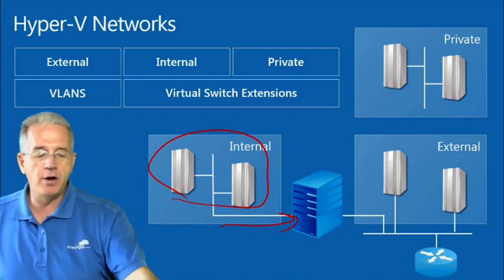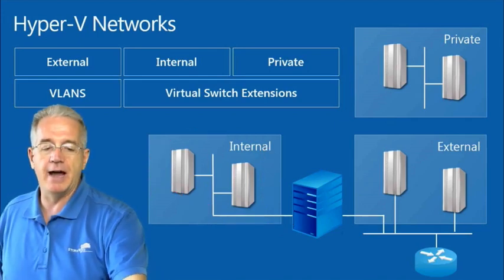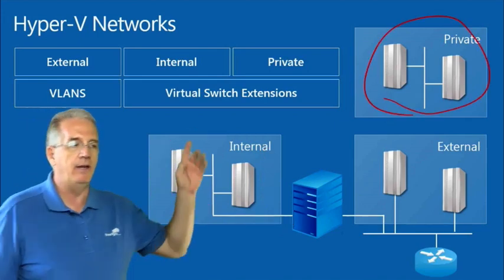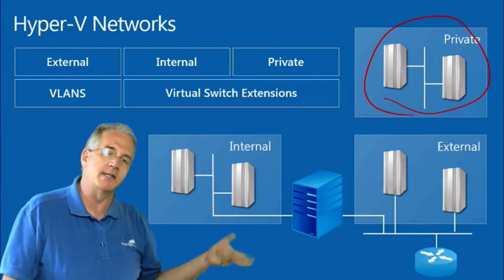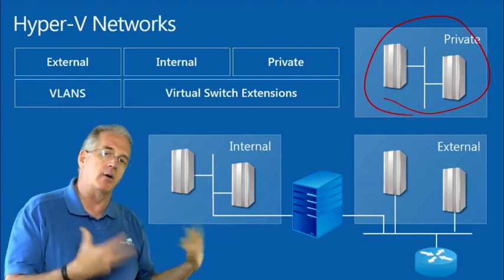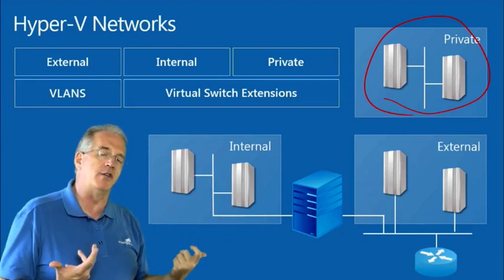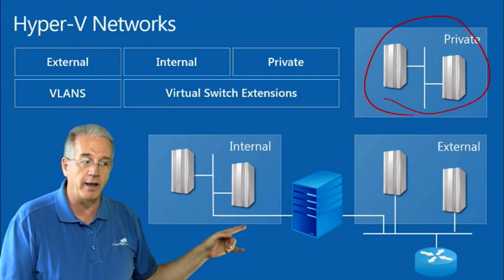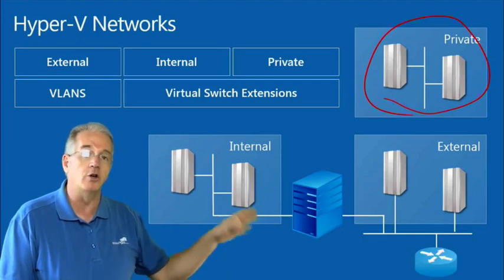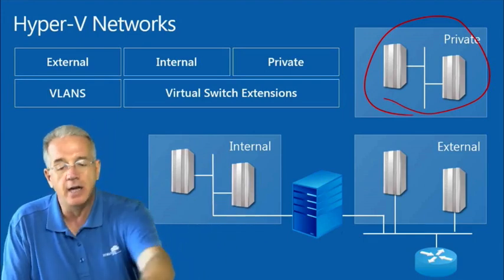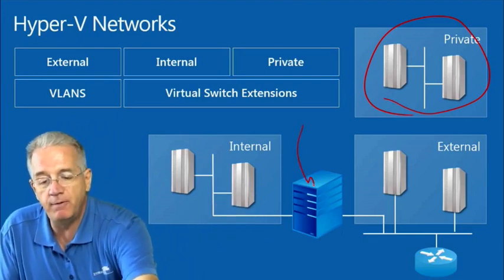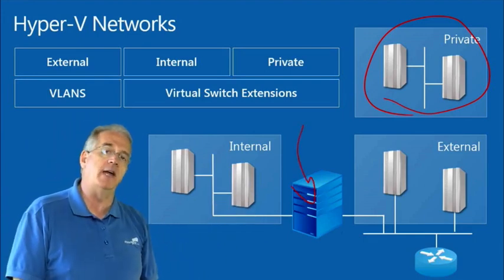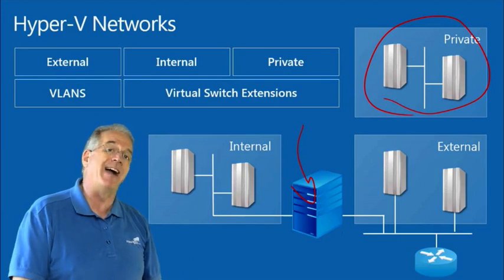The third option is a private network. With a private network, the virtual machines assigned to it can communicate with each other, but nobody else can talk to them. External networks can't talk to them, and the Hyper-V host can't talk to them via a network. They're isolated.